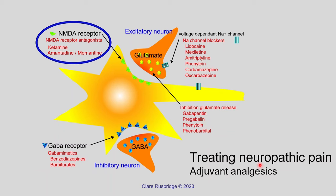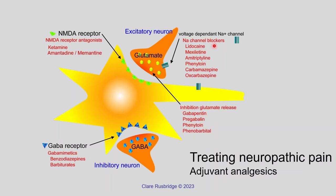We can also inhibit glutamate release — this is where gabapentin and pregabalin, the gabapentinoid drugs, have their main site of action. Phenobarbital also has an action here; though this anti-epileptic has more adverse effects, it is sometimes used in specific circumstances such as feline oral facial pain syndrome, which seems to respond better to phenobarbital. Drugs affecting the GABA receptor include benzodiazepines such as Valium and barbiturates. Drugs affecting the NMDA receptor include ketamine, amantadine, and amantidine. In summary, many drugs are used for neuropathic pain but none are truly specific — they are mostly anti-epileptics, sedatives, anesthetics, or other adjuvant agents with broad applications.